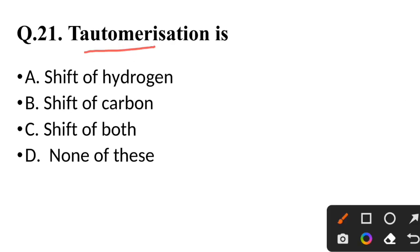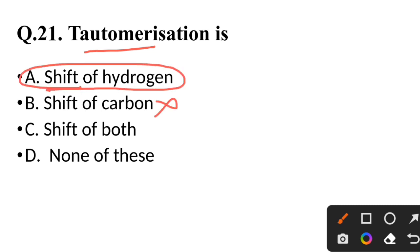Question 21: Tautomerization is — shift of hydrogen, not shift of carbon, not shift of both — correct answer is shift of hydrogen.